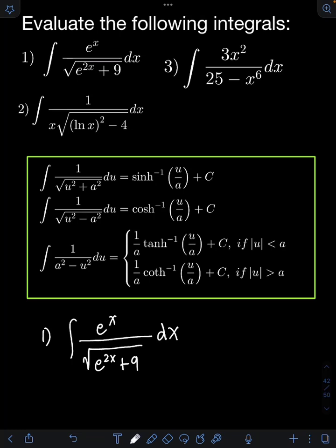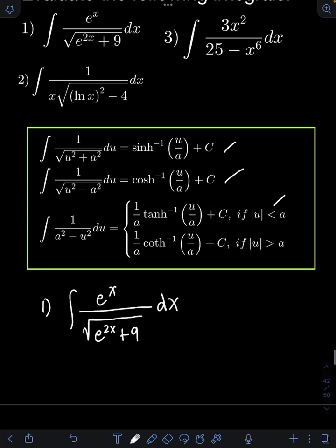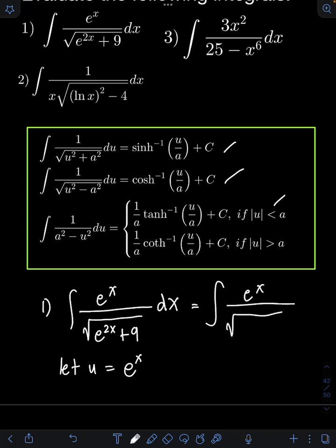We have here integrals yielding inverse hyperbolic functions. Here are the formulas we will use when evaluating integrals yielding inverse hyperbolic functions — we just need to memorize them. Going back to our problem, before we can apply this form of the integrals, we can rewrite e^(2x) as (e^x)² by the law of exponents, then plus 9 dx.